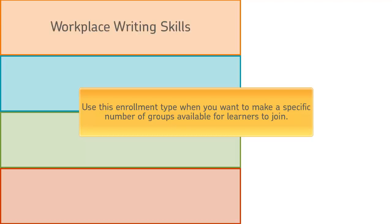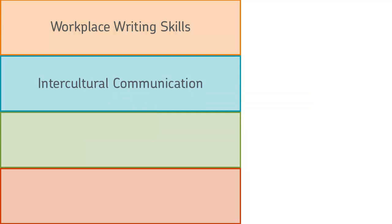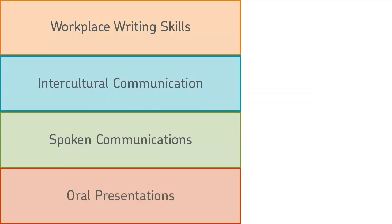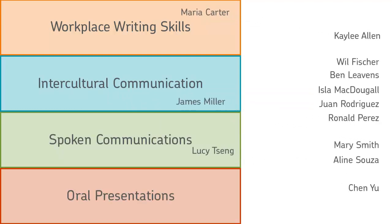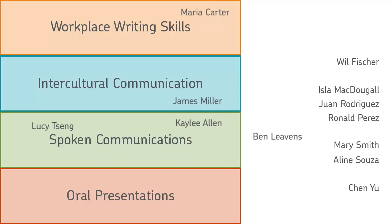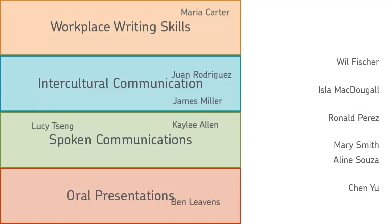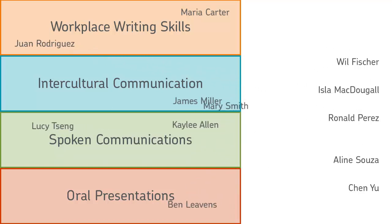For example, your class is doing cumulative assignments. There are four topics from which learners can choose. You use the 'Number of Groups Self-Enrollment' enrollment type to allow the learners to choose their own groups.